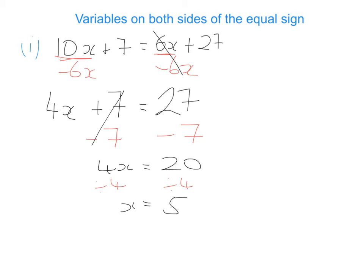The key thing with these questions is to get rid of one of the variables on one of the sides by minusing it away. I generally recommend getting rid of the smaller number because it means you won't end up with a negative. But if you do it the other way around, it will still give you the same answer.